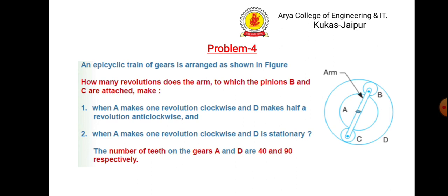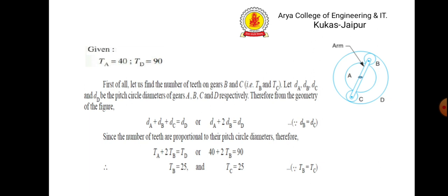Let us take one more problem. In the epicyclic train arrangement shown, how many revolutions does the arm (to which pinions b and c are attached) make: (1) when a makes one revolution clockwise and d makes half a revolution anti-clockwise, and (2) when a makes one revolution clockwise and d is stationary. The number of teeth on gears a and d are given as 40 and 90 respectively. From the figure geometry: da plus db plus dc equals dd. Replacing d with t, the number of teeth on gear b is found to be 25. Since db equals dc, we have tb equals tc.